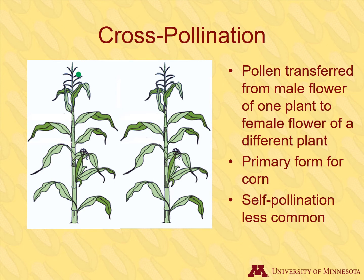There are two different types of pollination: cross-pollination and self-pollination. Cross-pollination is the transfer of pollen from one flower to the stigma of a different flower on another plant. Corn is a cross-pollinating species where wind disperses pollen from the tassel to the silk of a different plant. Self-pollination is when pollination occurs within the same plant. This occasionally happens in corn, and while it is less common, this type of pollination is important in breeding, as you will see later in this module.